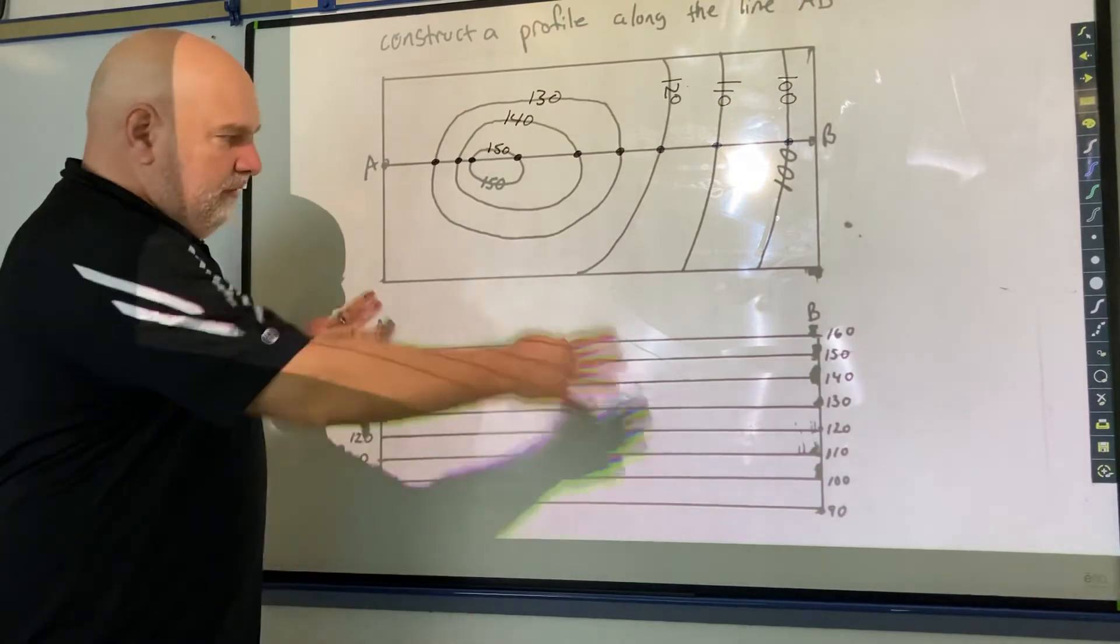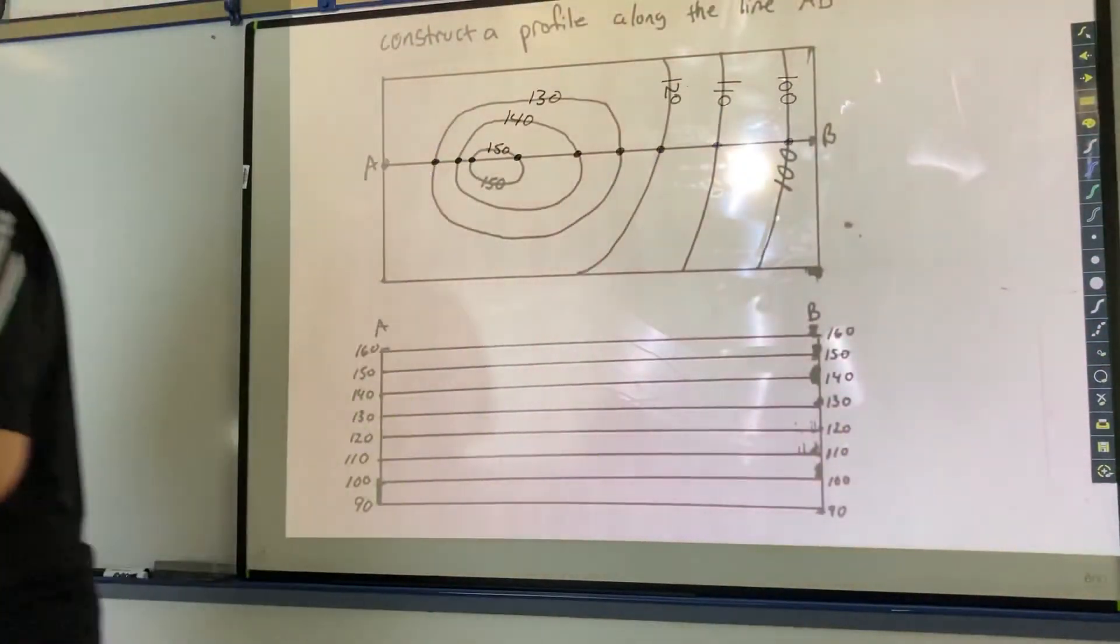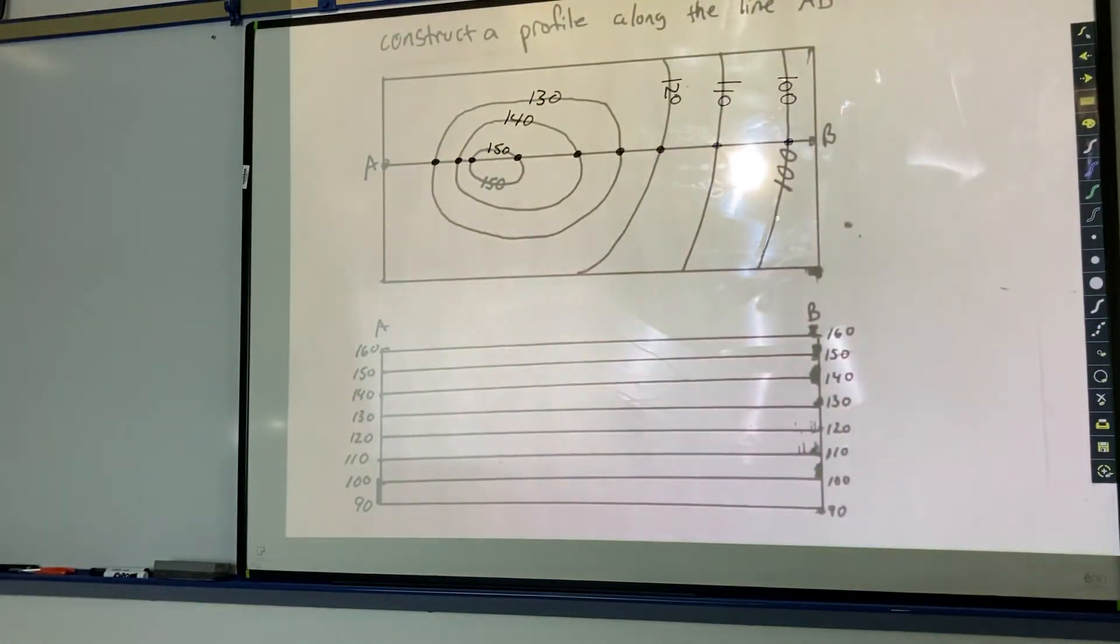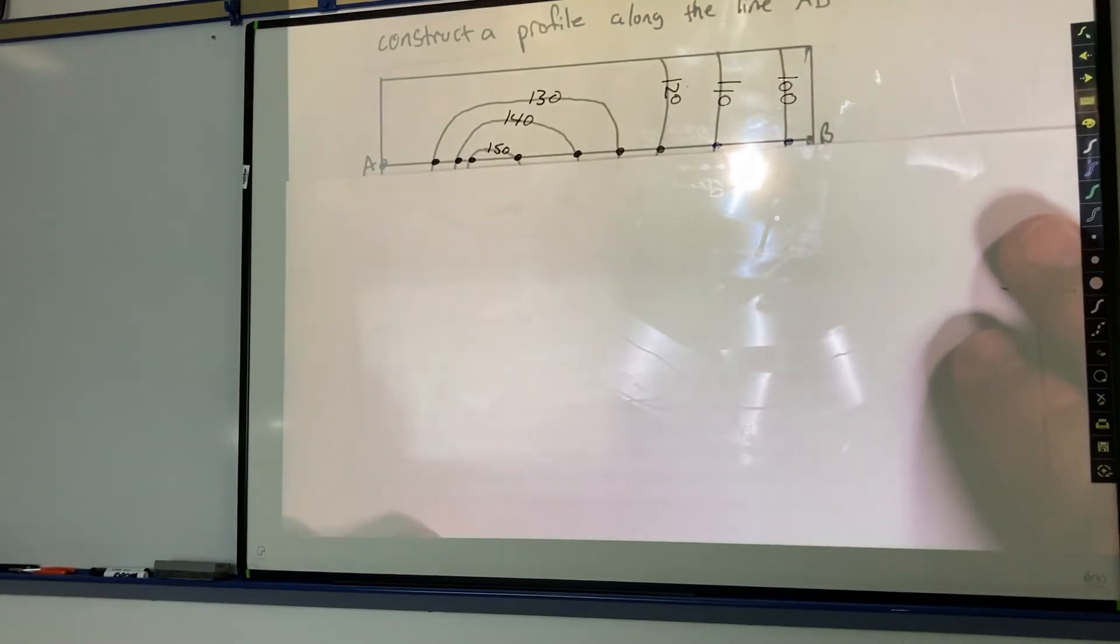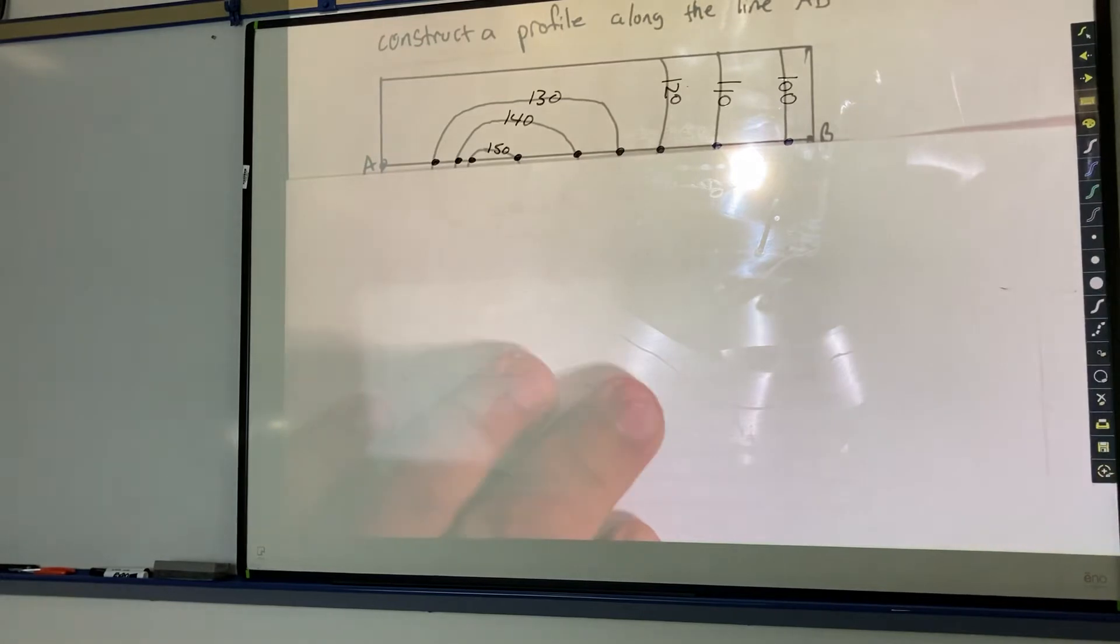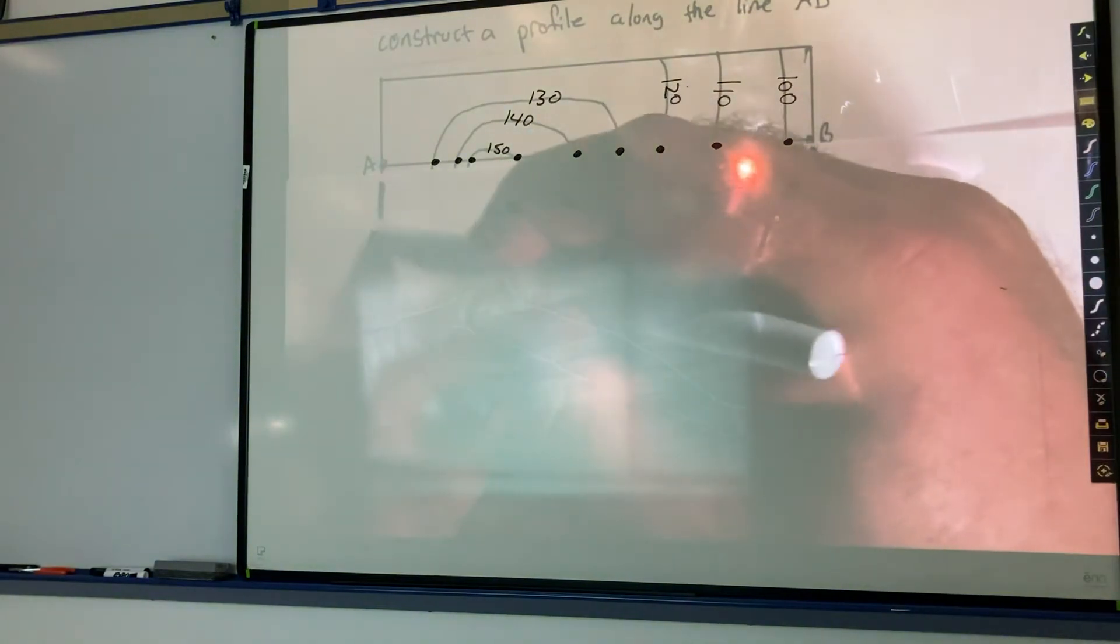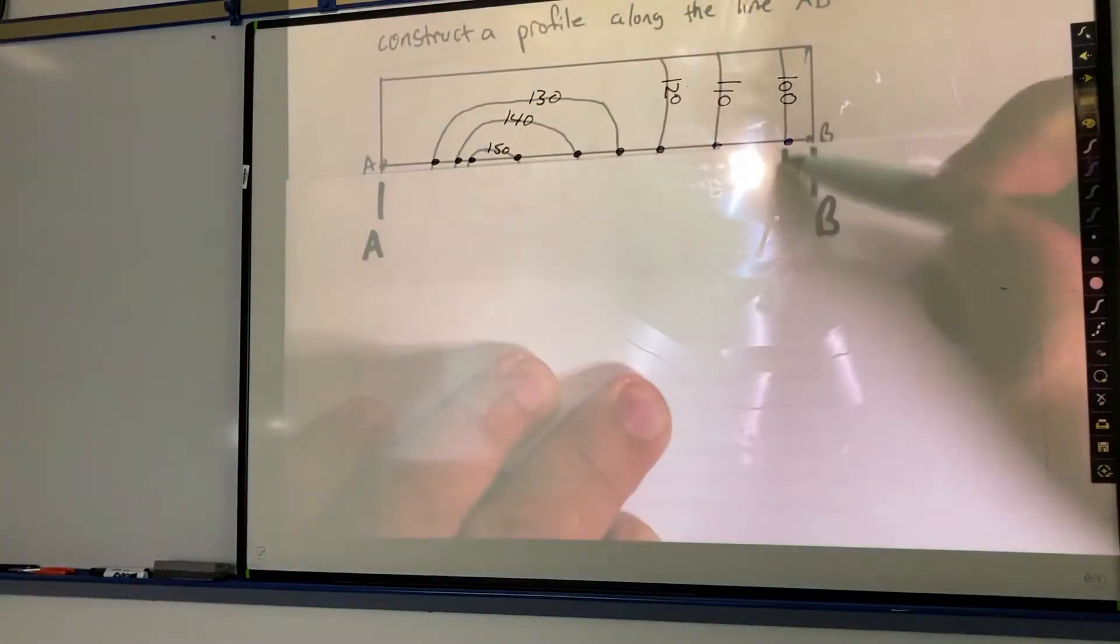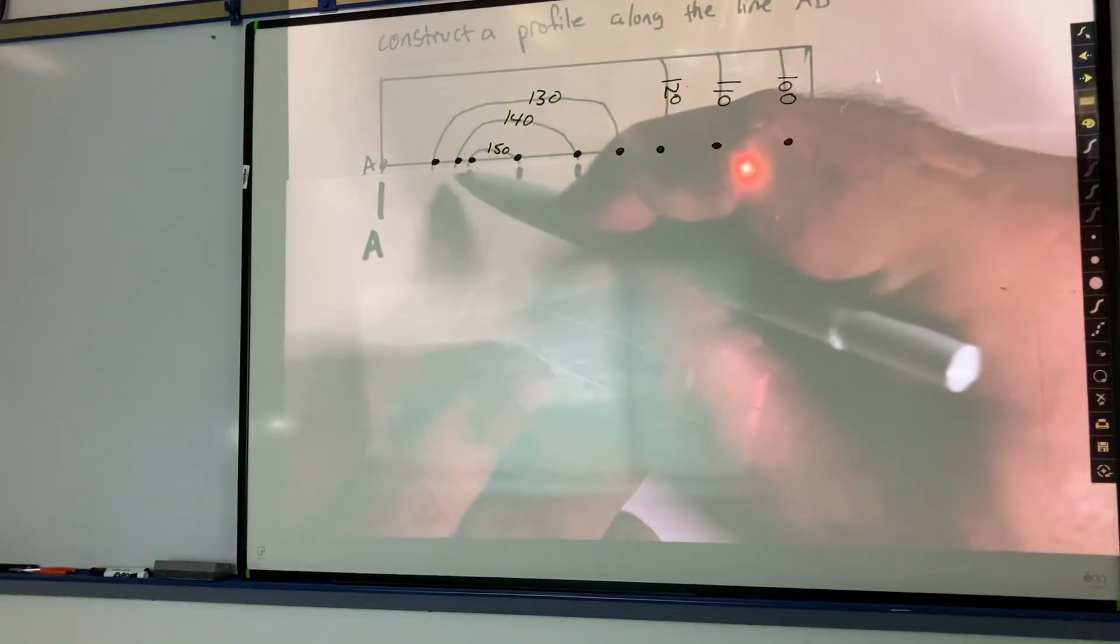All right, so I take my piece of paper like this and I'm going to start transferring the data to my paper. So I'm going to mark off where the B is, mark off where the A is, and then any of those places where that contour line crossed that line AB, I mark on my paper like that.